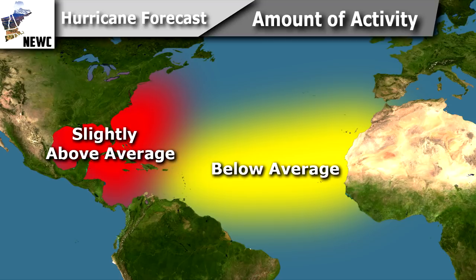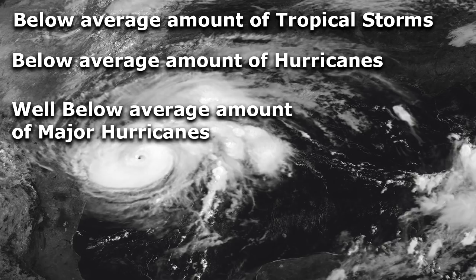Even though there are average temperatures and not below-average temperatures, it just doesn't look good for development this year. I don't think this will be a big hurricane year at all. Here's my written forecast: below-average amount of tropical storms, below-average amount of hurricanes, and well-below-average amount of major hurricanes. There will be a few tropical storms and a few weak hurricanes — that happens every single year — but they'll likely develop during just a couple of days of favorable conditions in one lucky spot, and won't have the time to develop into a major hurricane.